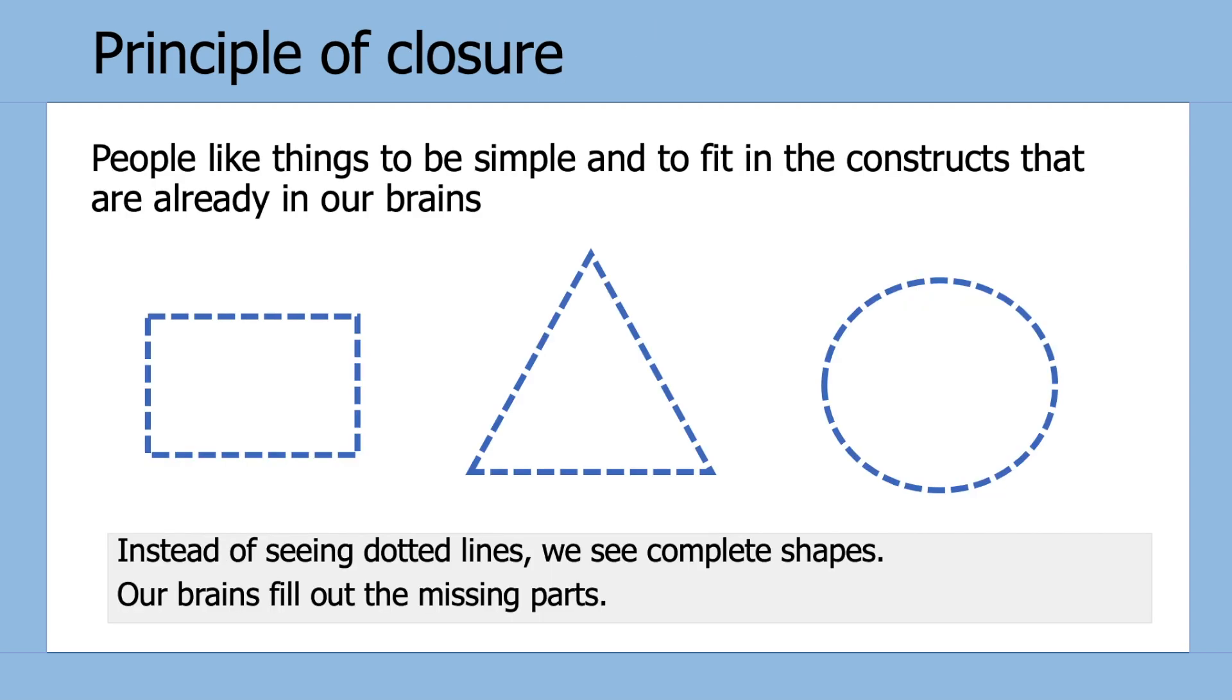The next principle is the Principle of Closure, and the best way to describe this is that brains like things to be simple and they want to fit visualizations into constructs that are already present in our brains. So these shapes are drawn out with dotted lines, but our brain fills out the missing parts so that we automatically see the full complete shape.